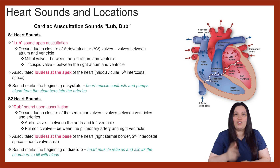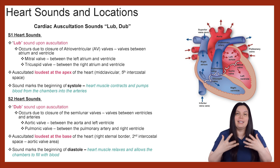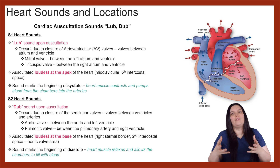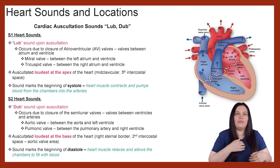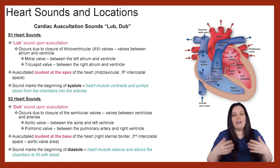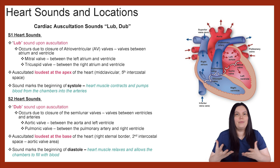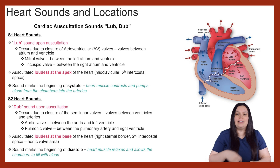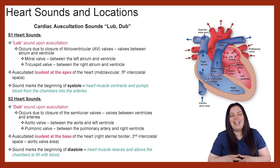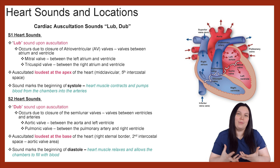Next, we have our S2 heart sound — that is the dub sound we hear when auscultating the heart. This occurs due to the closure of the semilunar valves, which are the valves between the ventricles and the arteries: the aortic valve between the aorta and the left ventricle, and the pulmonic valve between the pulmonary artery and the right ventricle. S2 is heard loudest at the base of the heart — the second intercostal space, right sternal border — and marks the beginning of diastole, when the heart relaxes and chambers fill with blood.